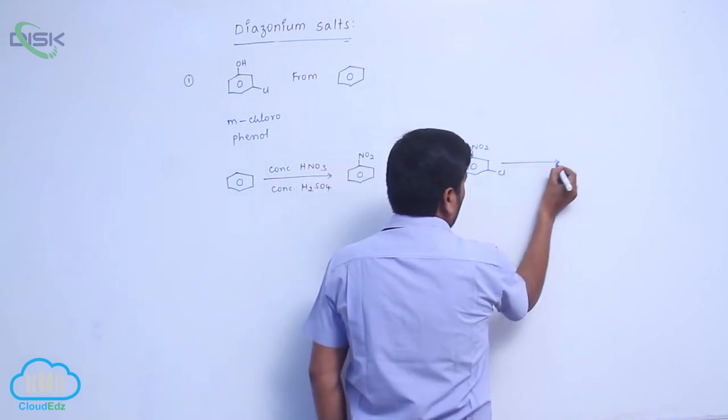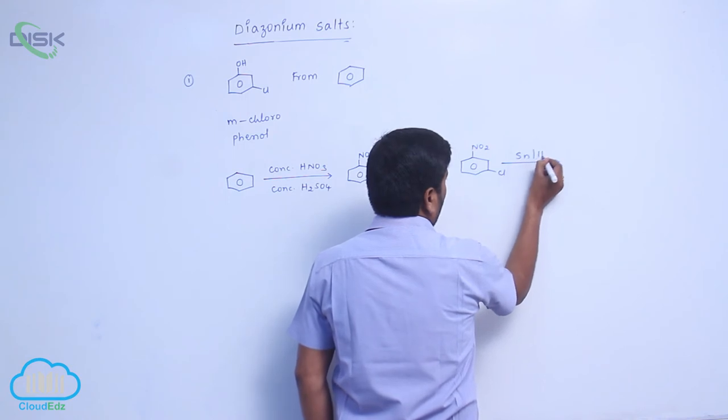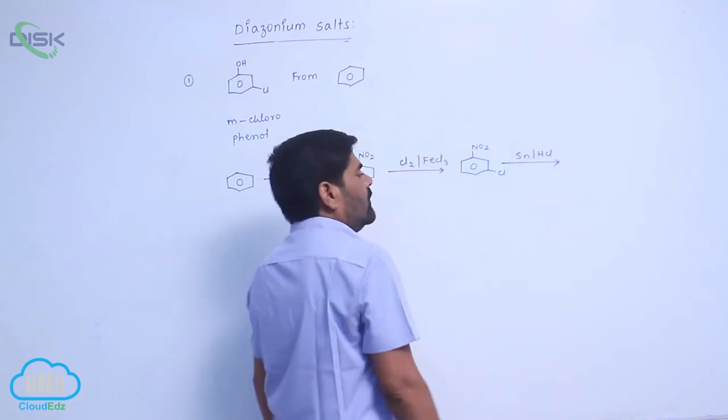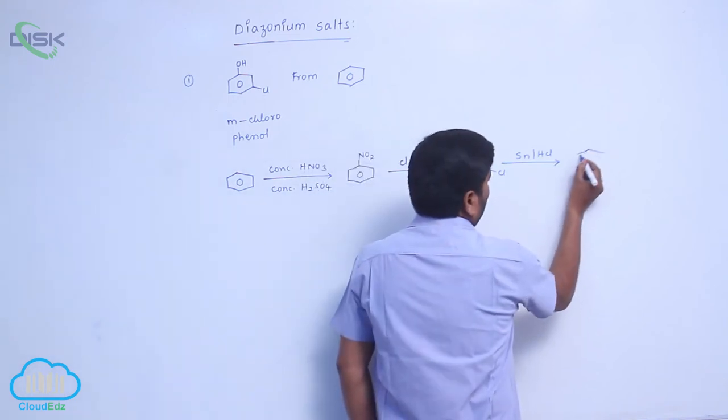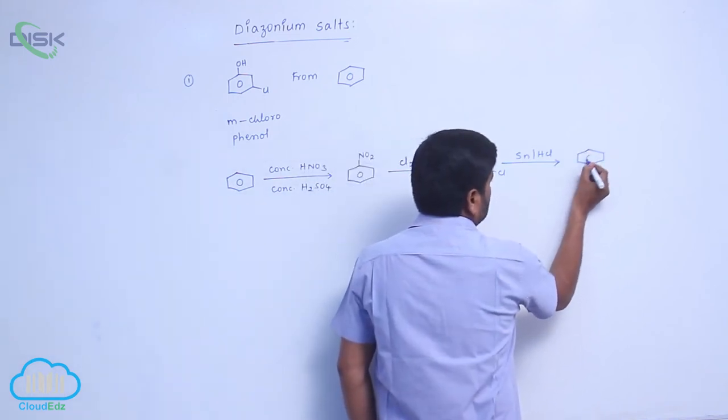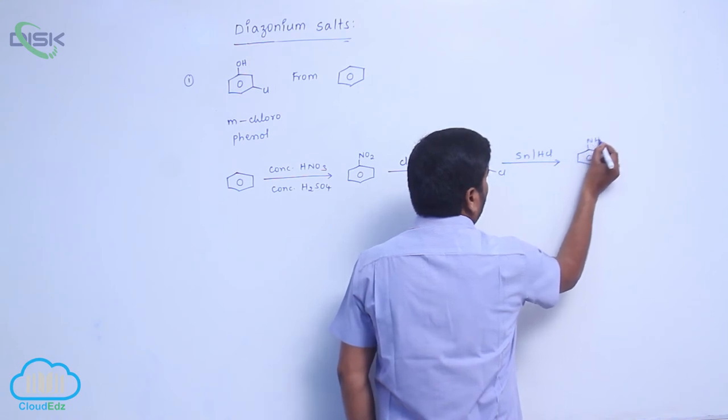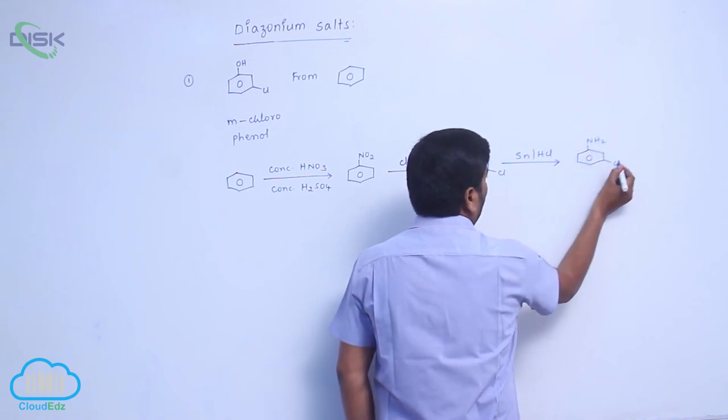To this, the nitro group is reduced by metal in presence of hydrochloric acid. The nitro group converts into amino group.